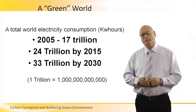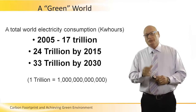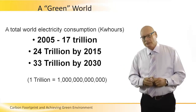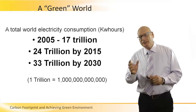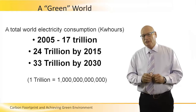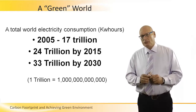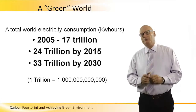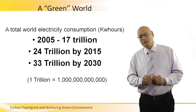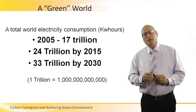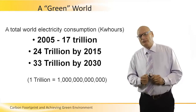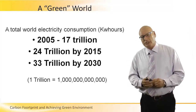Looking globally, in 2005 the total world electricity consumption was 17 trillion kilowatt hours — that's a 1 followed by 12 zeros. By 2015, just 10 years later, total consumption grew to 24 trillion kilowatt hours, roughly a 33–40% increase in only a decade. By 2030, world electricity consumption is projected to reach 33 trillion kilowatt hours.